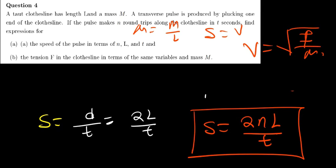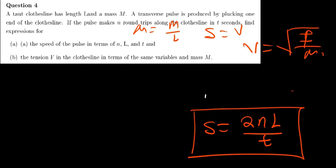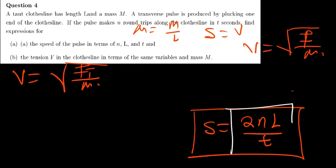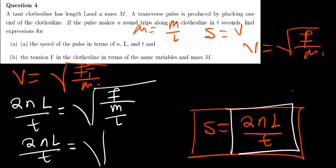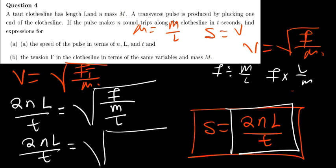To find the tension, we know the velocity for a string is given by the square root of the tension force divided by the linear density. The linear density is given by mass divided by L. Since we don't have the linear density directly, I'm going to replace it with M over L. So the velocity is given by the square root of the tension force divided by M over L, which is the same as the square root of FL over M.